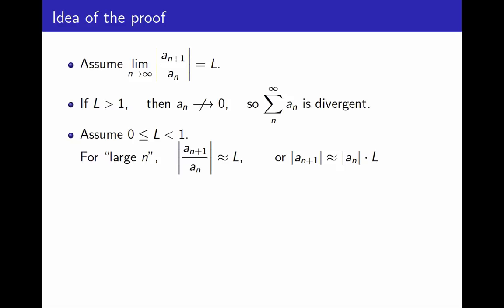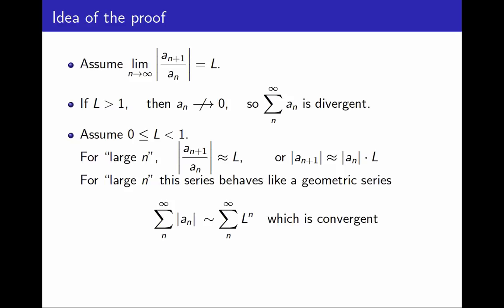Now, this will only be true for large values of n, but that is good enough, because we know for the purpose of convergence or divergence, the only thing that matters is what happens to the tail of the series. And I recognize another series that behaves exactly like this, that one term is the previous one times a constant. That is how geometric series work. So this is going to allow me to do a comparison between this series with absolute values and the sum of L to the n. But we know the sum of L to the n is convergent, because it's a geometric series with L being between 0 and 1. And that will allow me to prove that the original series is absolutely convergent.